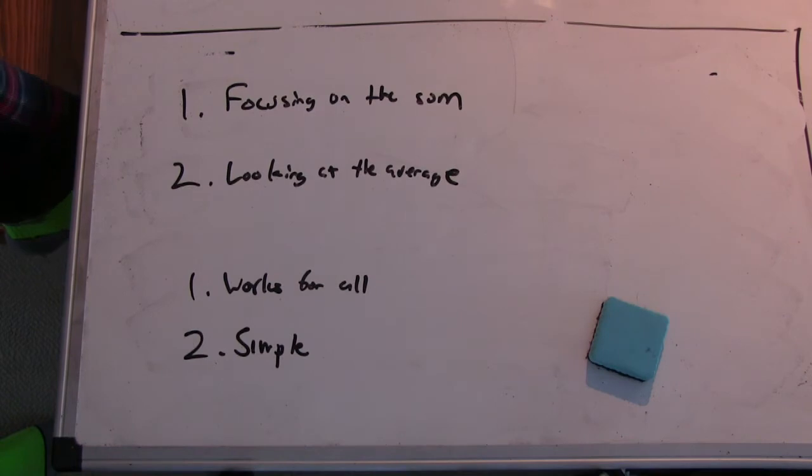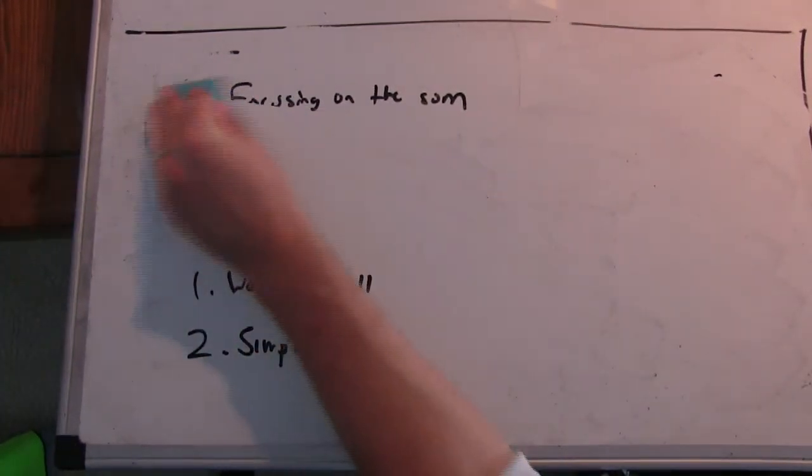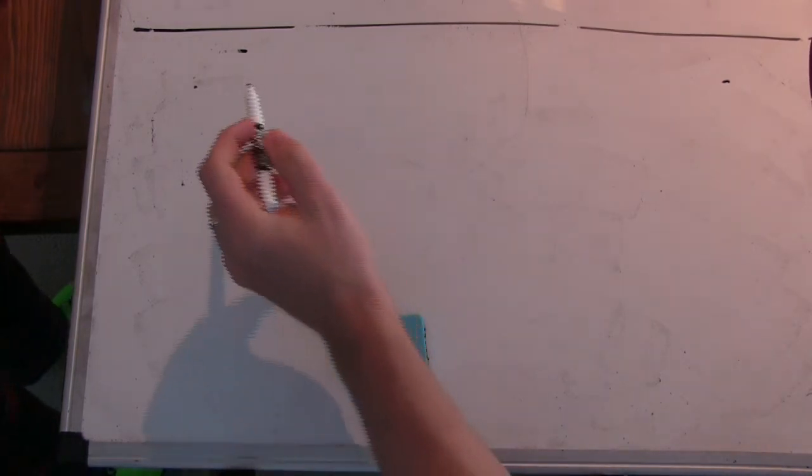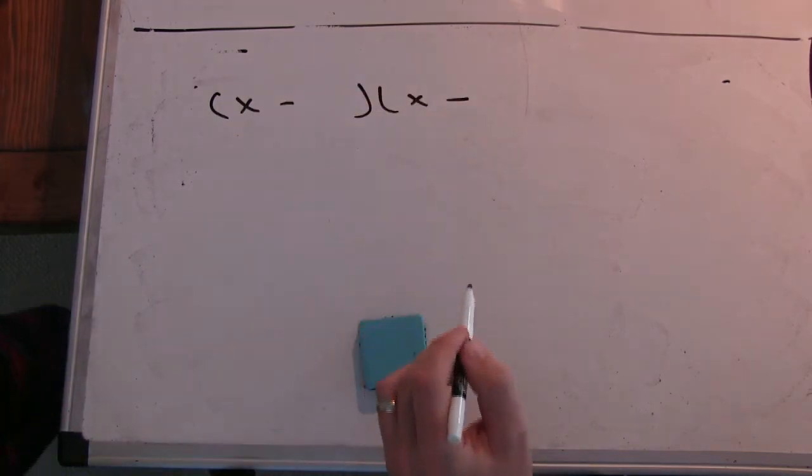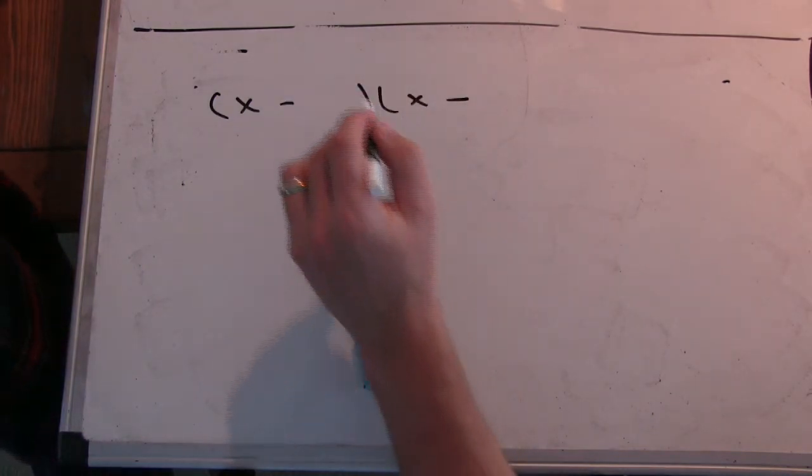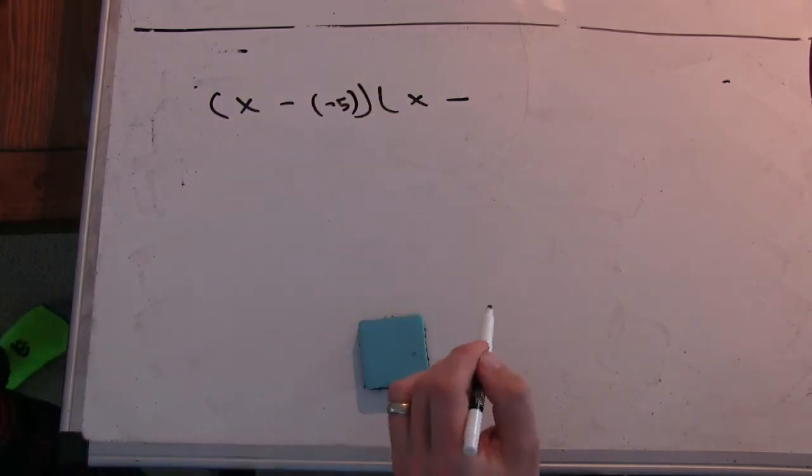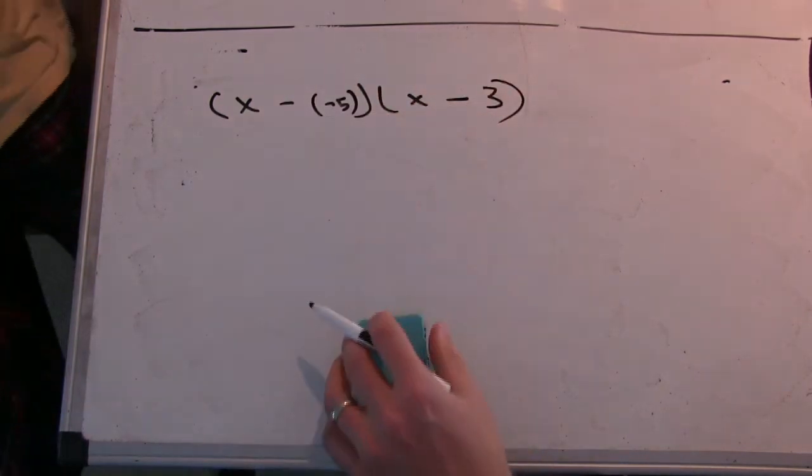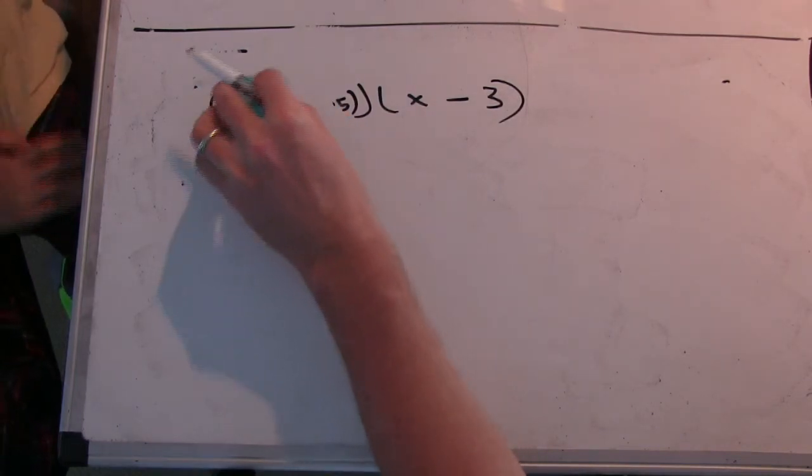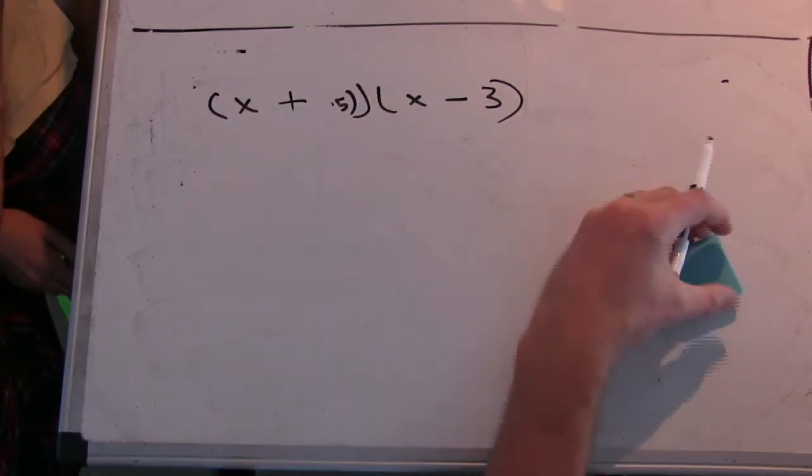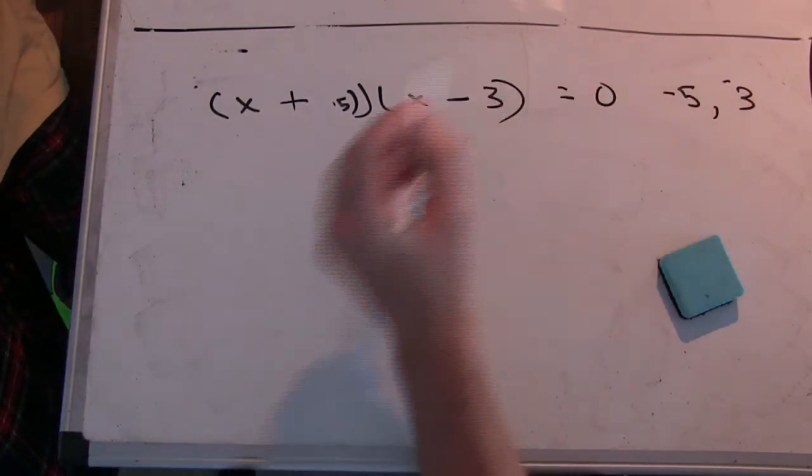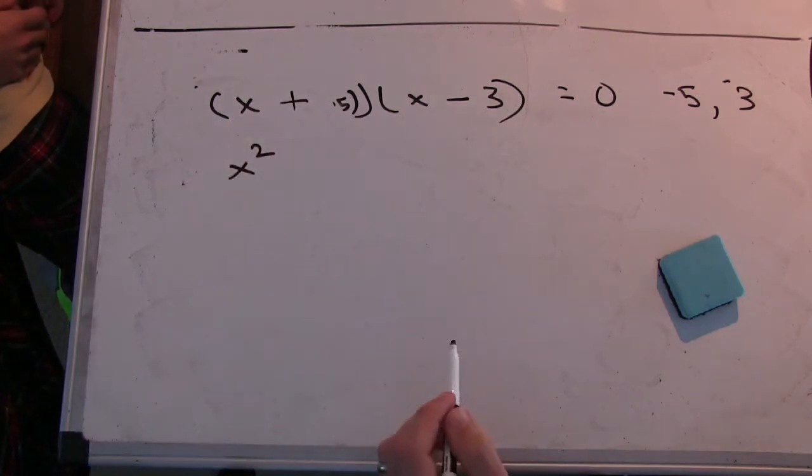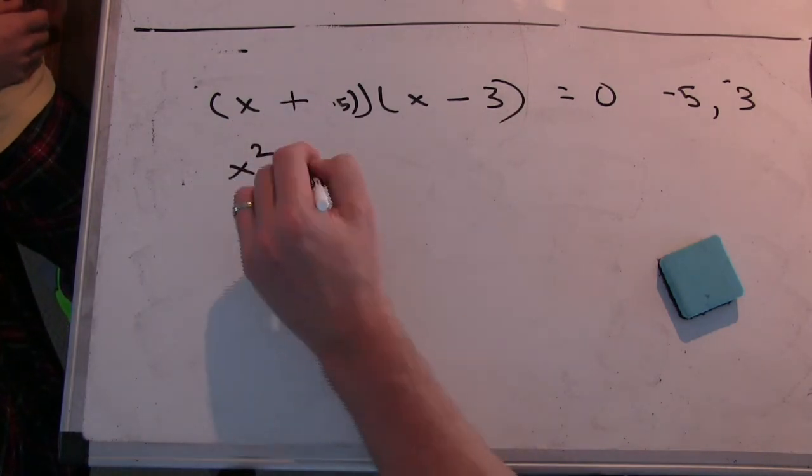Okay, so maybe what we should do is just first work through an example where we know the roots like he did. So just give me two numbers that we can have as the roots. Maybe like negative five and three. Okay, so this will be x plus five times x minus three. What does this multiply out to be? So our roots are negative five and three. x squared plus two x minus fifteen.